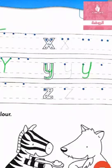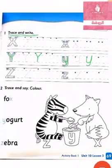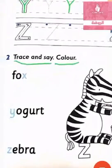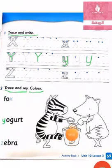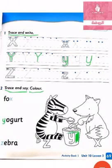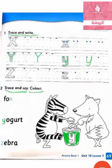Small y. When you're finished, we want to trace and say, then we want to color. Look here. Yeah, you're good. Yeah, yogurt. Now, where is yogurt? Yeah, yogurt. Let's color yogurt. Did you finish? Excellent KG, great job. Thank you, bye bye.